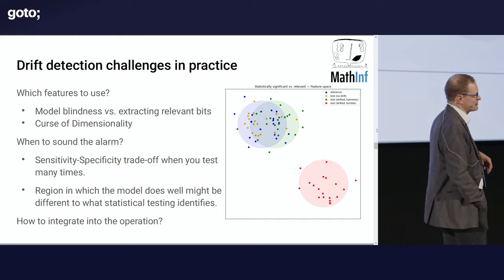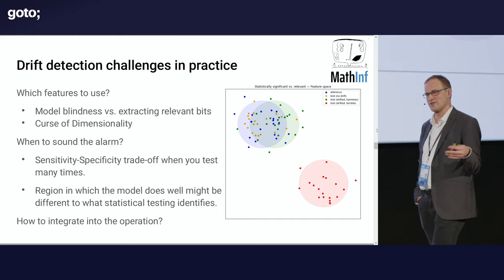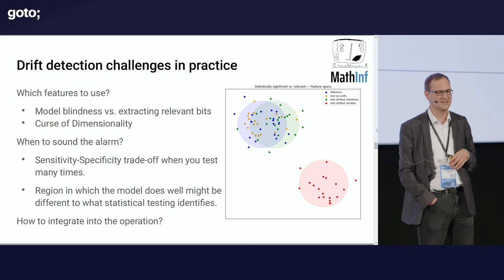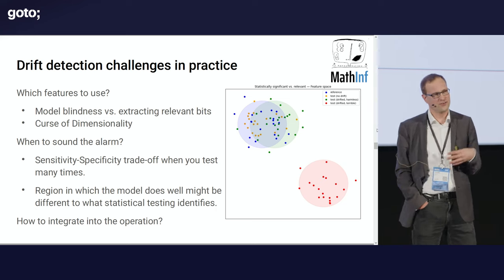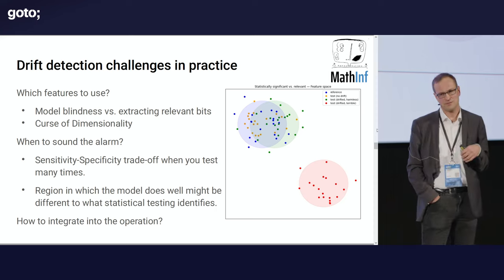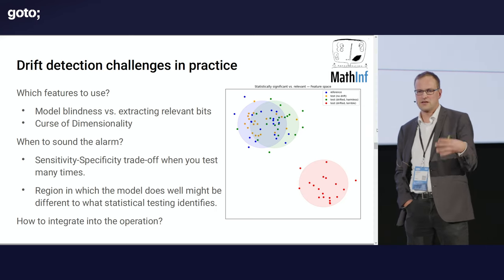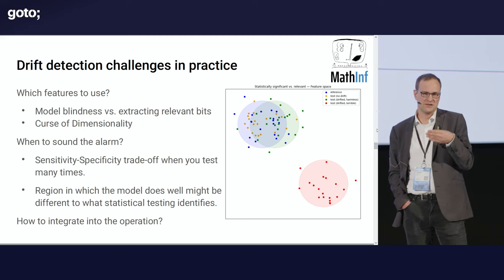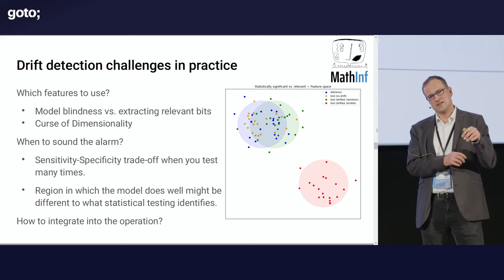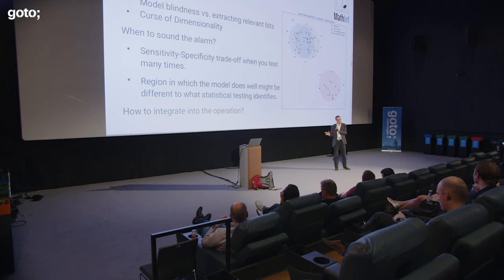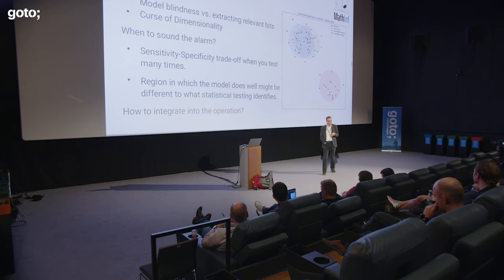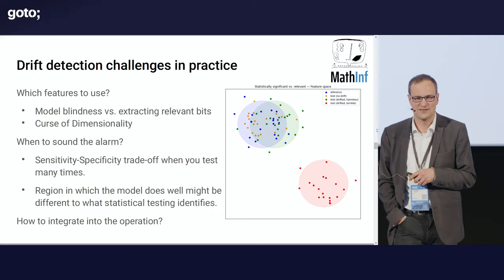The other part is the curse of dimensionality. There will be people that go with one-dimensional pictures when they discuss drift detection. It's not only harder to draw with 100 dimensions instead of two — it's also statistically harder. If you go for high dimensions, you'll miss things because it's statistically hard; or if you project to lower dimensions, you'll miss things because you projected down. Somewhere in between is the best you can do.